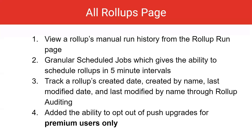We have several updates for the All Roll-Ups page. You can view a Roll-Up's manual run history from the Roll-Up Run page. You can now have granular scheduled jobs, which gives you the ability to schedule Roll-Ups in five-minute intervals. You can track a Roll-Up's create date,